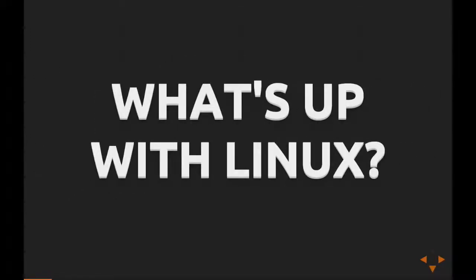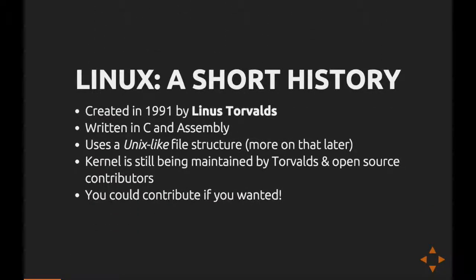So what exactly is up with this Linux thing? To give you a short history, Linux was created in 1991 by Linus Torvalds. He still manages Linux to a large extent today and is kind of the benevolent dictator for life. It's written mostly in C and assembly and uses a Unix-like file structure. One thing that makes Linux different from Microsoft or Apple's OS X is that the Linux kernel is developed in an open-source manner, meaning you can view all the changes and source ever contributed to the kernel, and you also have the potential of contributing yourself.